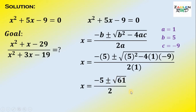Now, this is the value of x. If we substitute it into x squared plus x minus 29 all over x squared plus 3x minus 19, the equation gets very messy. That's why the instruction says to find the value without solving the equation. So the question is: what do we do to find the value of this expression without solving?